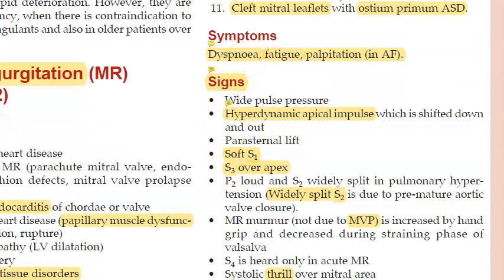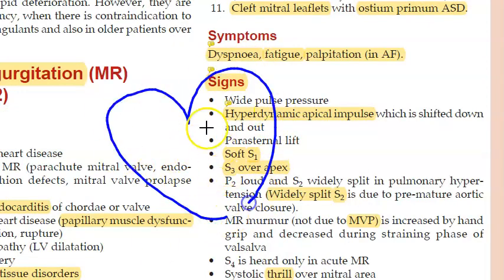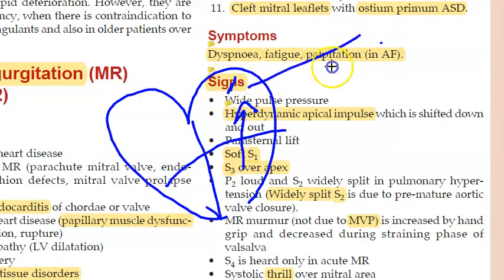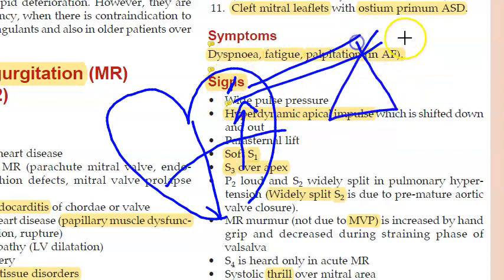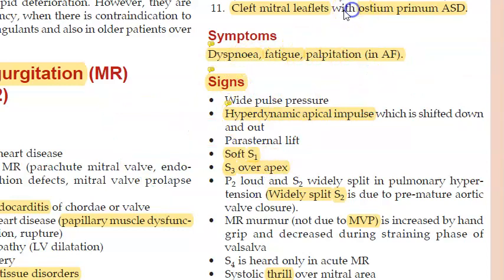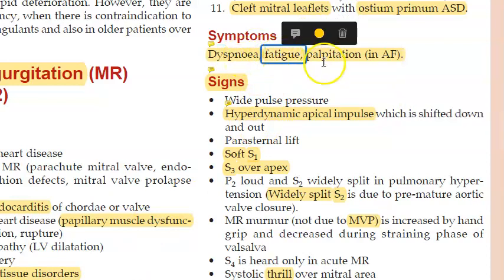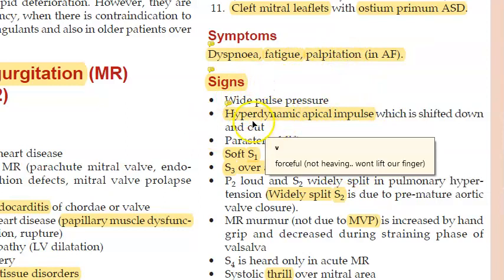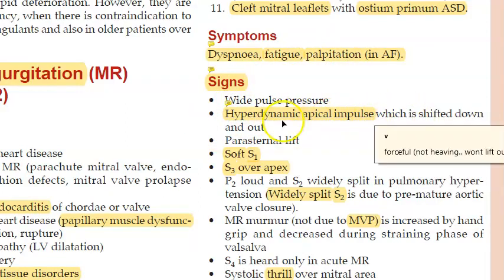The symptoms of mitral regurgitation include dyspnea due to increased pressure causing pulmonary edema, fatigue, and palpitations. The increased pressure in the left atrium can cause atrial fibrillation, leading to palpitations.